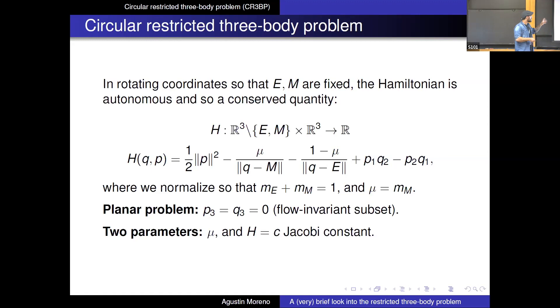So here we usually normalize in such a way that the sum of the masses of the Earth and the Moon is one. So you can think of this mu, which is usually the mass ratio, just as the mass of the Moon, right? The planar problem is precisely when we drop the last two coordinates, which is the flow invariant subset. And there are basically two parameters on the problem, which is mu and the Jacobi constant, which is the total energy of the system.